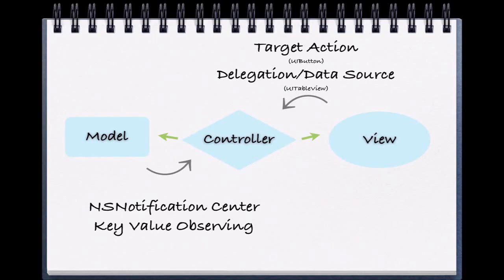Each button that we dragged created boilerplate code but did not have any predefined implementation. The view has two common methods of alerting the view controller that something has occurred on the view: target-action and delegation or data source. You have already seen examples of target-action when we hooked up our button. When we press the button, it sends a message to another object — in this case, our view controller. Hence, we can say that our view controller is the target because it is receiving the message from the button.